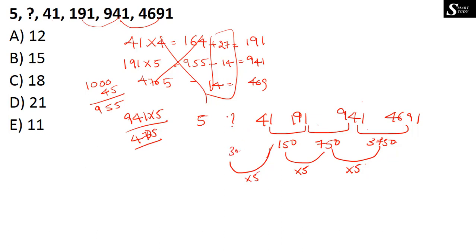Let's verify: 30 ÷ 5 = 6, and 11 minus 6 = 5, which confirms the logic is correct. So the answer is 11, which is option E. Though explaining takes time, in the actual exam with practice this should take a maximum of 20 to 25 seconds.